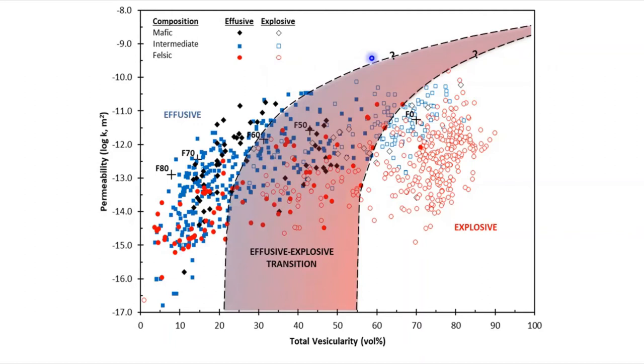Magma can reach this permeability threshold either by a rapid increase in permeability due to fracturing or a decrease in porosity due to collapse of permeable pathways.